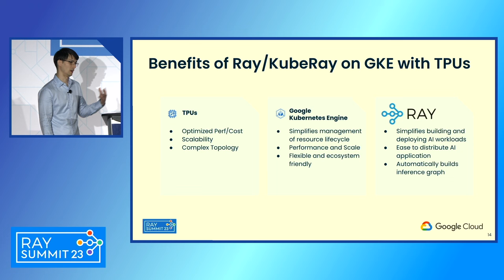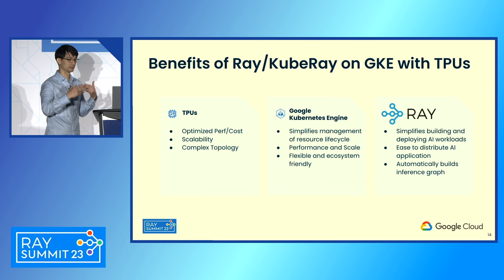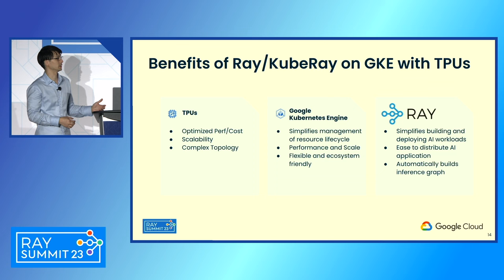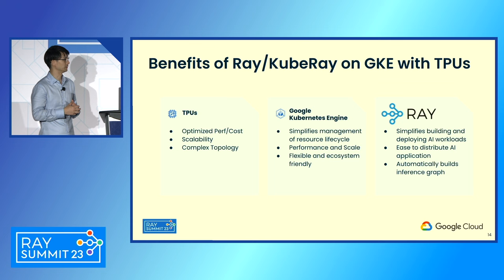We heard about the benefits customers get from TPUs, but that comes with some differences in managing them — optimized performance, scale, but a slightly more complex topology. Kubernetes helps manage complex deployments. It's a trusted standard for deploying, operating, and monitoring really any type of application. Furthermore, it has a robust ecosystem of OSS tools that are both mature and applicable to any workload — which is where Ray comes in.